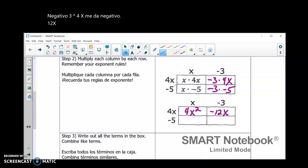Negative 5 times x is negative 5x. And then negative 3 times negative 5. Well, negative negative makes a positive 15.